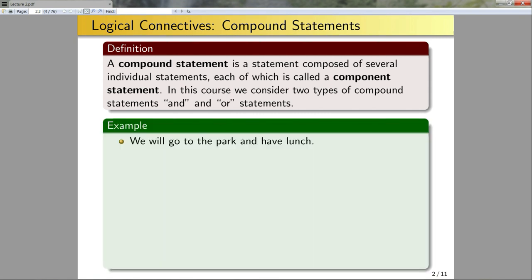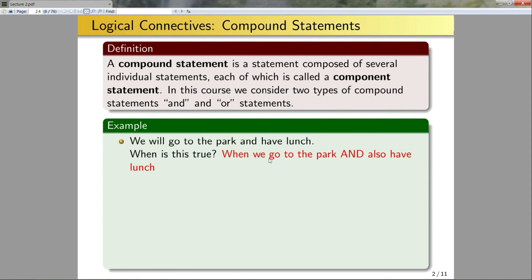An example of a compound statement is: 'We will go to the park and have lunch.' A natural question to ask is when is this statement true? This will be true precisely when we go to the park and also have lunch — both of these individual component statements need to be true at the same time.